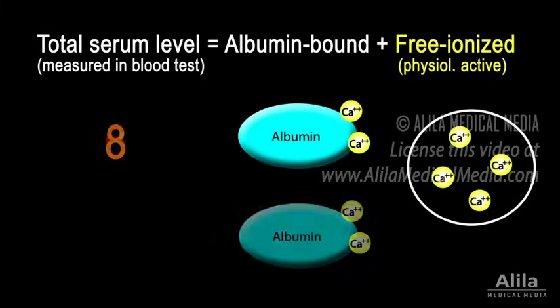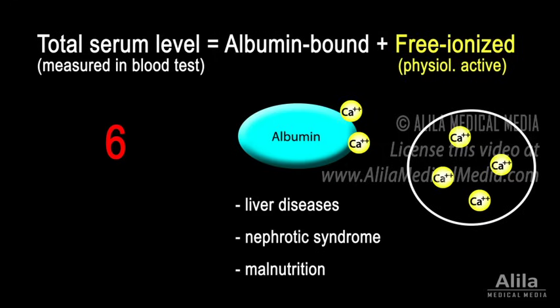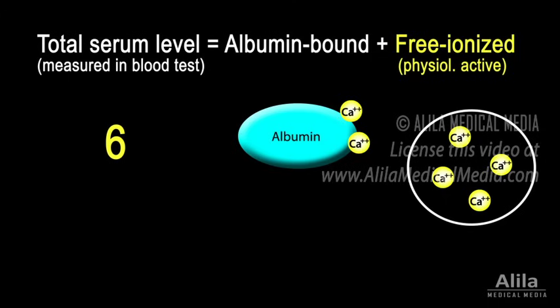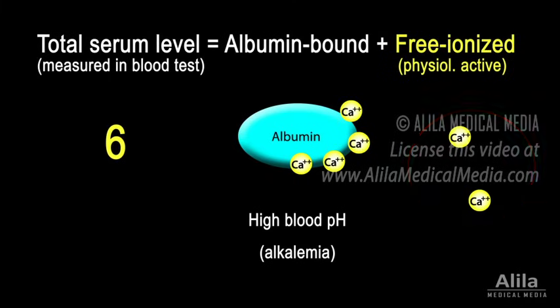For example, decreased albumin levels, such as in liver diseases, nephrotic syndrome, or malnutrition, produce lower serum calcium values, but the amount of free calcium may still be normal. On the other hand, in conditions with high blood pH, albumin binds more calcium, leaving less free ionized calcium in the serum while the total calcium level may appear normal.